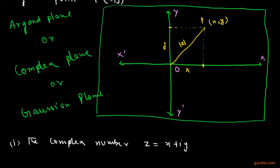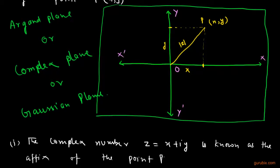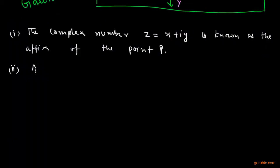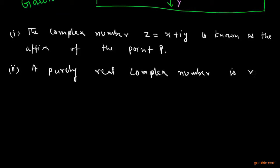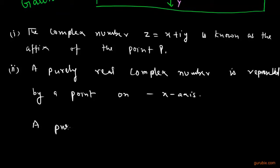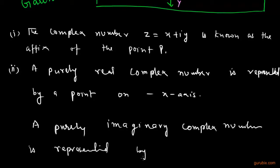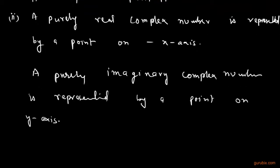Here are two important points to understand. First, the complex number z equals to x plus iota y is known as the affix of the point P. The second point is that a purely real complex number is represented by a point on the x-axis. Similarly, a purely imaginary complex number is represented by a point on the y-axis.